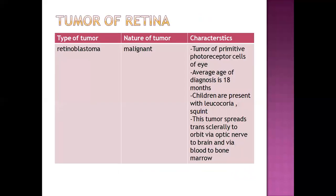Finally, tumor of the retina — one kind is retinoblastoma, which is a malignant tumor of the photoreceptor cells of the eye. The average age of diagnosis is 18 months. In children, they present with leukocoria and squint, which involves looking in multiple directions. This tumor spreads transsclerally to the orbit, via the optic nerve to the brain, and via blood to the bone marrow — meaning it spreads everywhere once mixed with the blood. It can be seen in childhood but can also develop in adulthood.